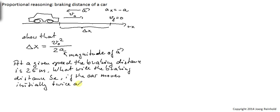initially twice as fast? Obviously, the braking distance should increase, but by how much? Now, with experience, you should be able to tell the answer right away and see it's quadratically in the velocity, so the braking distance has to quadruple if we double the speed. But let's see how we can show this algebraically.